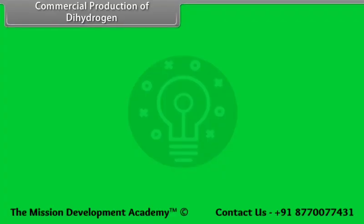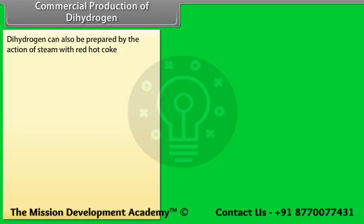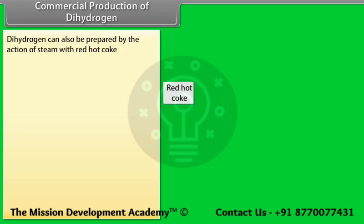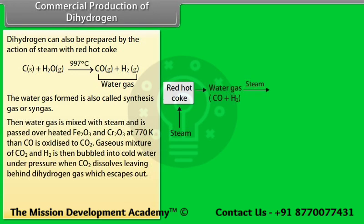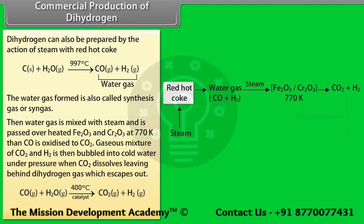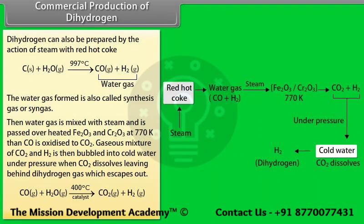Commercial production — Steam with red hot coke: Dihydrogen can be prepared by the action of steam with red hot coke. The water gas formed is also called synthesis gas or syngas. Water gas is mixed with steam and passed over heated Fe₂O₃ and Cr₂O₃ at 770 K, where CO is oxidized to CO₂. The gaseous mixture of CO₂ and H₂ is then bubbled into cold water under pressure; CO₂ dissolves, leaving behind dihydrogen gas which escapes out. This reaction is called the water gas shift reaction.